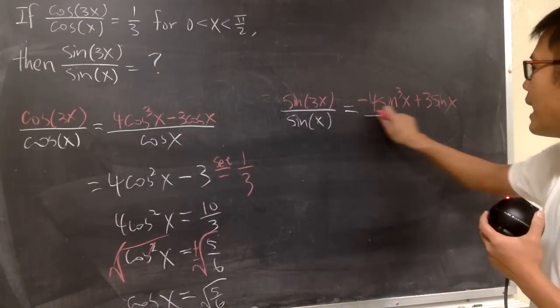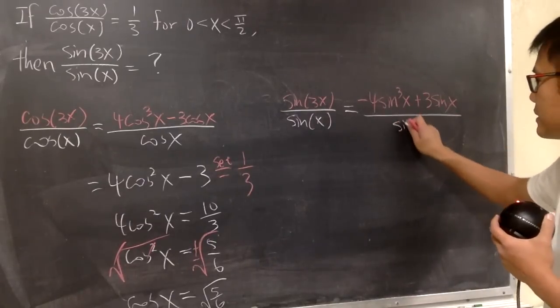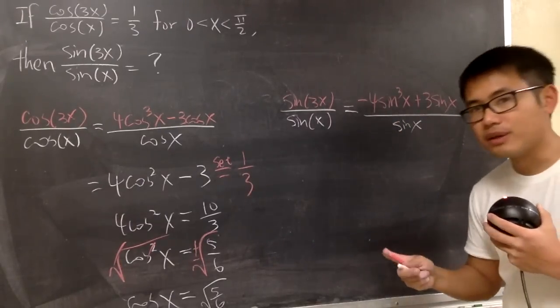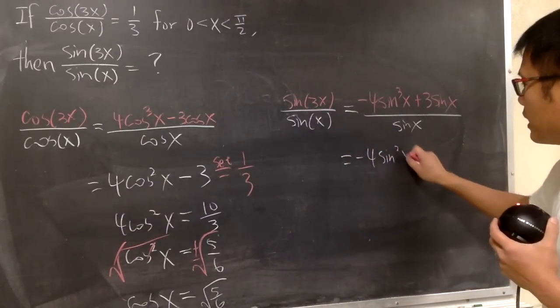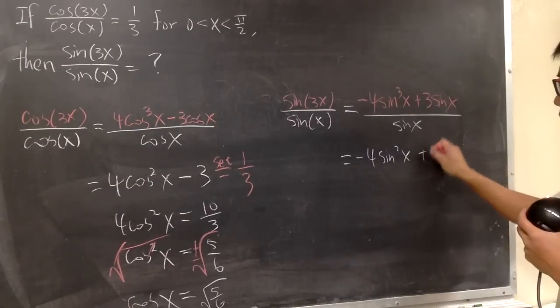And then divide it by sin(x). Once again, we can split the fraction. This over that is just -4sin²x, and this over that becomes plus 3.